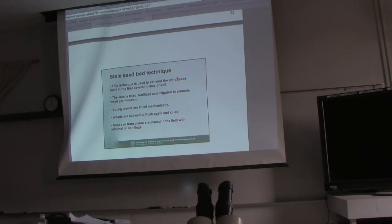Stale seed bed technique. This technique is used to exhaust the active seed bank in the first inches of soil. First the area will be tilled, then fertilized, then irrigated to promote weed germination. So you're actually fertilizing your weeds before you put out a crop. You till the area, put some fertilizer out there, all the weed seeds that just got exposed and given the right conditions are like 'yay!' Then they come up ready to charge out, and what do you do? You kill them. So you fertilize them, you get them excited, ready to go, and then because they emerged, you can find them and kill them. Then you allow the seeds to flush again and kill those again. So you continue irrigating and waiting for those nutrients to hit the seeds and cause that trigger for germination. Then seeds or transplants are placed in the field with minimal or no tillage.